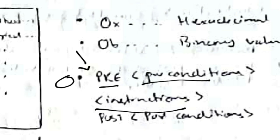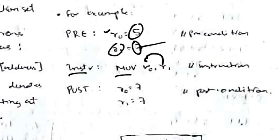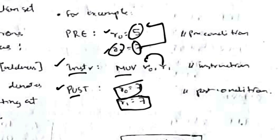In this module, the format used shows preconditions of a register, the instruction performed, and then the post-condition showing what changed. For example, if r0 has value 5 and r1 has value 7, and we perform MOV r0, r1, then r1's value of 7 is moved into r0. After execution, r0 will have 7 and r1 remains 7.